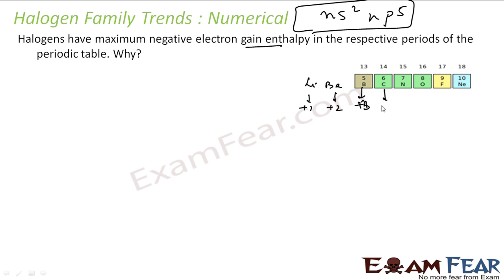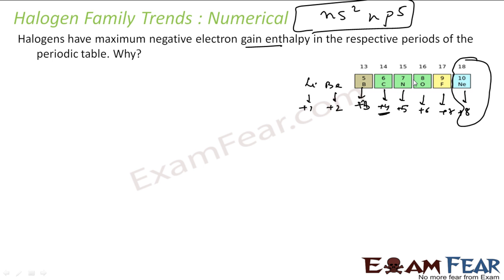Boron has three extra electrons, carbon has four outermost electrons, nitrogen has five, oxygen has six, chlorine has seven, and neon has eight in the outermost shell. Neon is already stable, so it won't accept or give electrons. Chlorine has seven electrons and needs only one to be stable. Oxygen needs two electrons to reach the stable configuration of eight. Nitrogen is short of three, carbon is short of four. But lithium, beryllium, and boron have extra electrons to give.